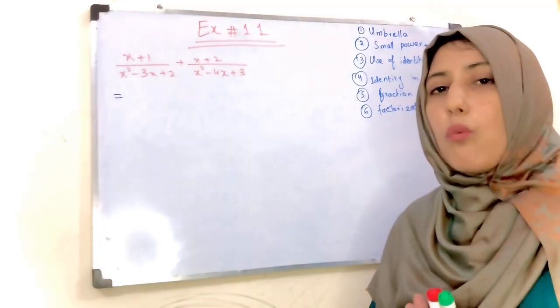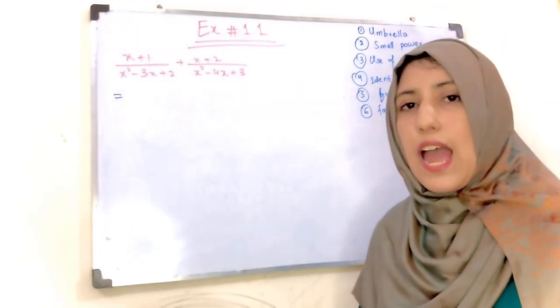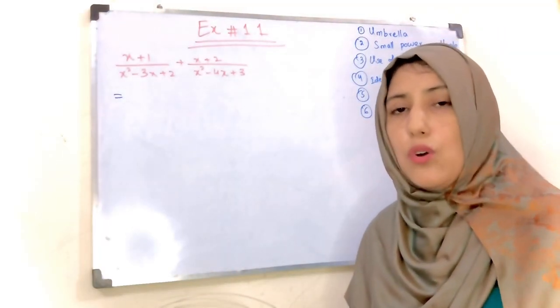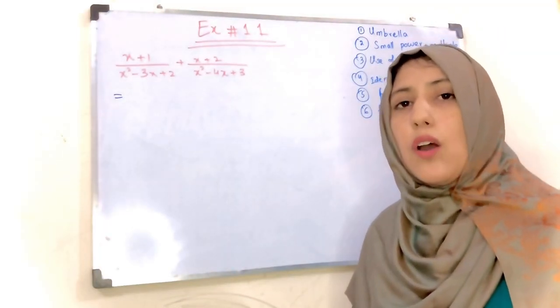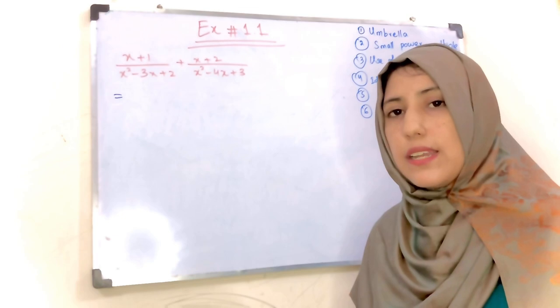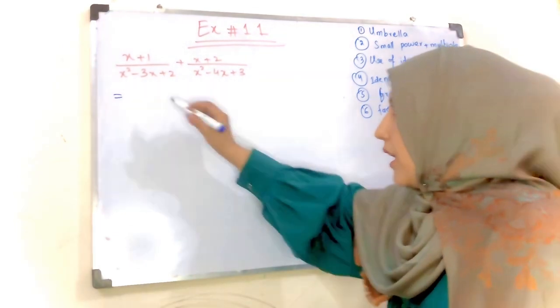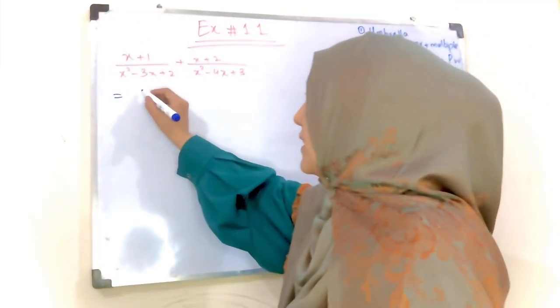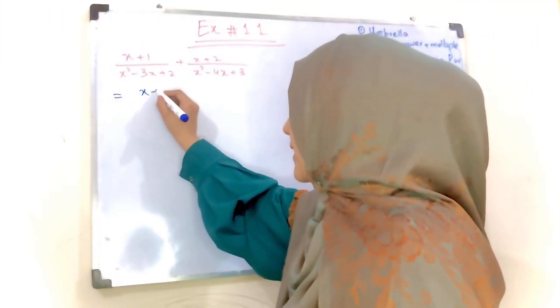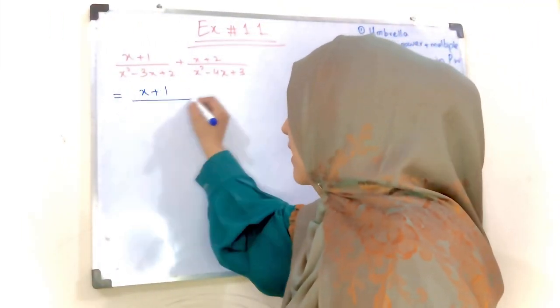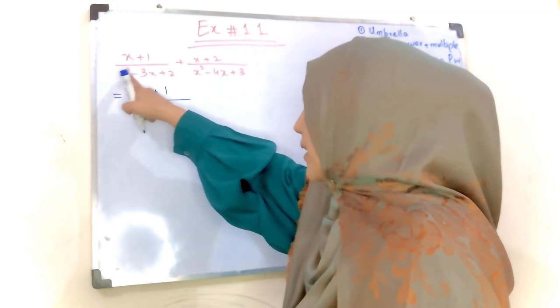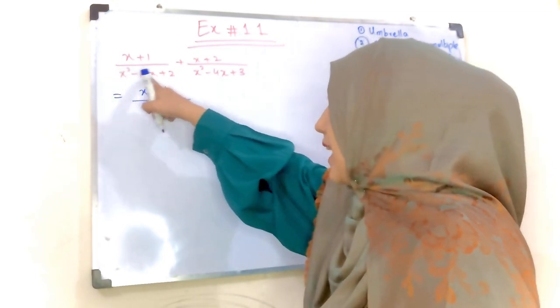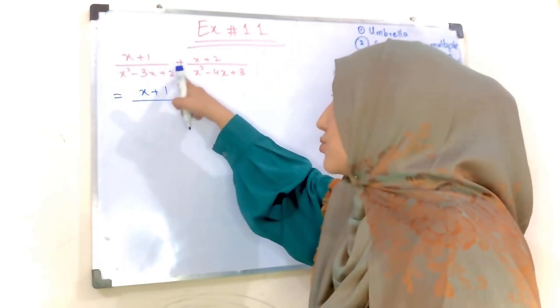What we have to do in the question — look at the denominator. The denominator is x squared minus 3x plus 2.